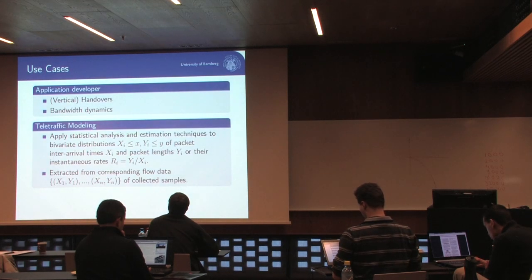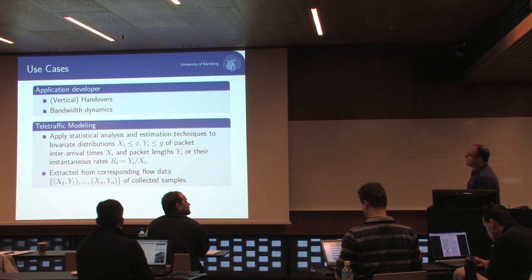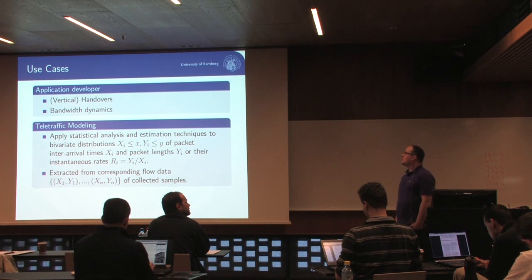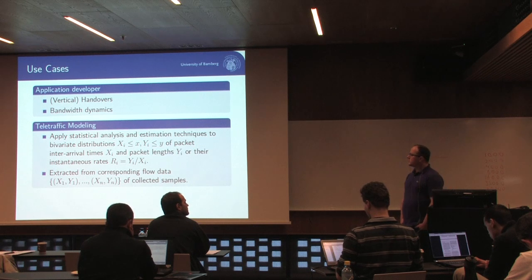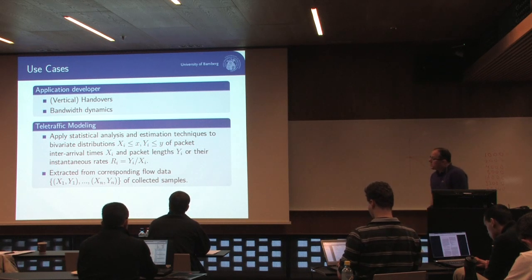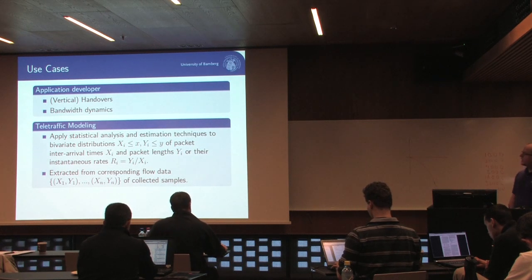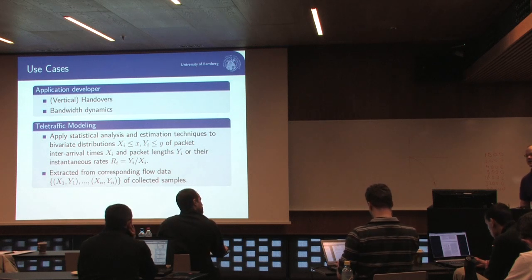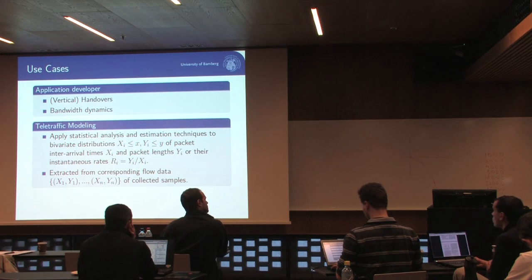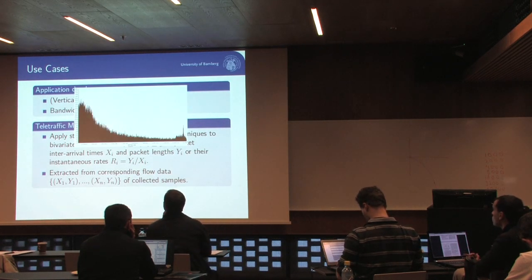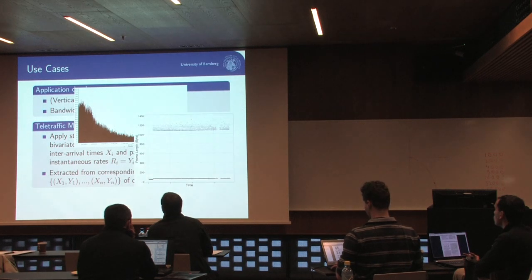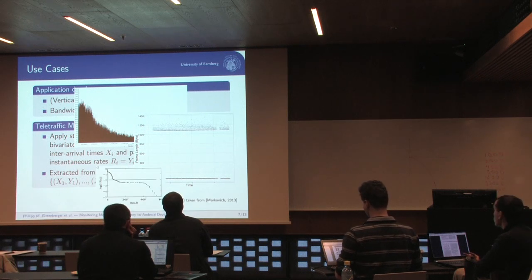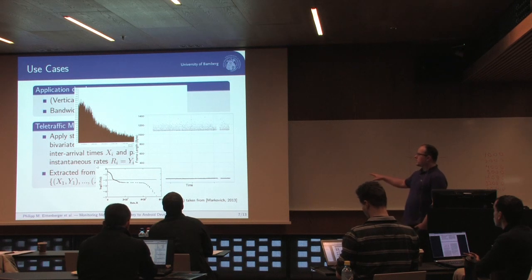How is it useful? We saw some use cases already. The application developer can get a feeling about the bandwidth dynamics, fluctuations, handover effects, and vertical handovers. We are mainly interested in tele-traffic modeling, and therefore we typically use packet lengths, inter-arrival times, and instantaneous rates. You could plot the distribution of inter-arrival times or try to model that. You can look at packet lengths over time — this is for a Subcast trace — or compute instantaneous rates and rank them. We are right now working on a model.